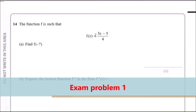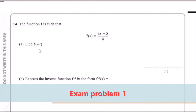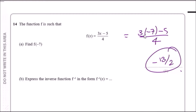The function f is such that f(x) = (3x − 5)/4. Find f(−7). This is easy — just replace x with −7: it's going to be (3 × −7 − 5)/4. When you do this you should get −26/4, which simplifies to −13/2. You can leave it as a fraction or a decimal.